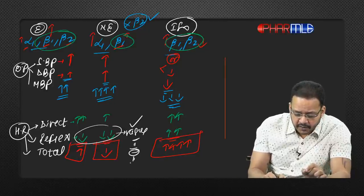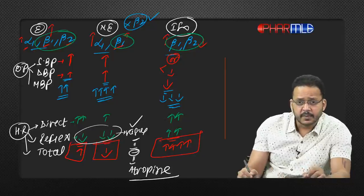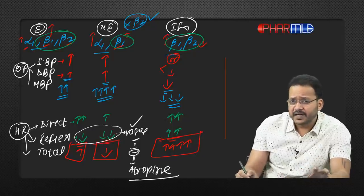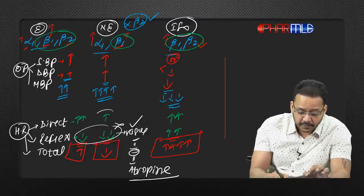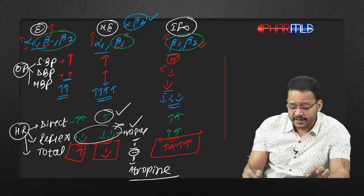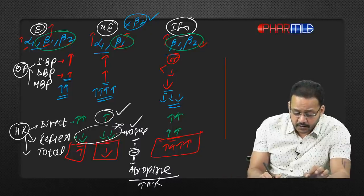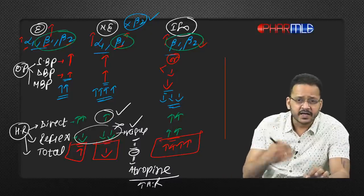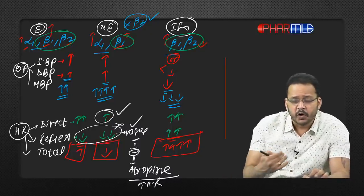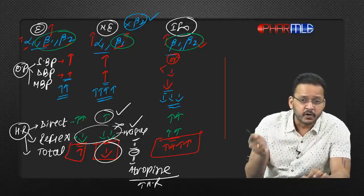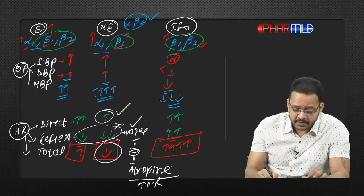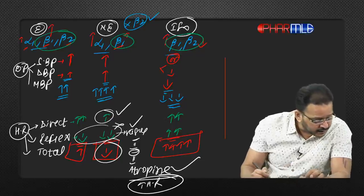This reflex bradycardia is mediated by the vagus. If I block vagus by giving atropine, only the direct effect of norepinephrine remains — which is an increase in heart rate. That is what they asked in the NEET exam: effect of norepinephrine on heart rate is bradycardia. Effect of norepinephrine in the presence of atropine is tachycardia.